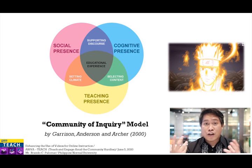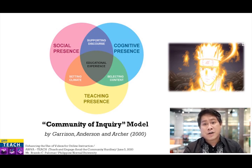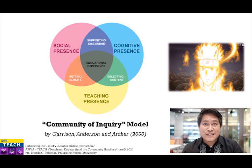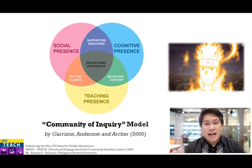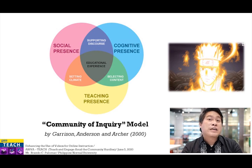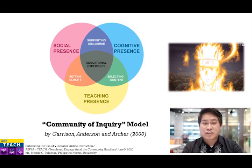When these forms of presence interact with one another, there are interlinking factors to consider. Cognitive presence interacting with teaching presence deals with the selection of content we will be using in our videos. Teaching presence interacting with social presence means we are trying to manage what kind of atmosphere we will be providing to our students when they watch our videos. The third interaction — between cognitive presence and social presence — addresses the supporting discourse we will use so that students may have the feeling that they are really in our class, despite the fact that they are just watching us present the concept.